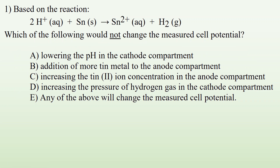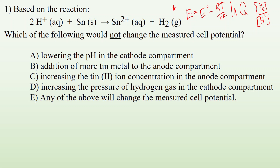Number one: based on the reaction shown, which of the following would not change the measured cell potential? We know that our equation is E equals E-naught minus RT over NF times the natural log of Q. So Q for this one is going to be products — the H2 gas over the H+ ion concentration. Anything in this equation will affect the cell potential. If we lower the pH, we're changing the H+ concentration, so that will affect it. Addition of more tin metal to the anode compartment — well, tin metal is not part of this equation, so this one should not change the potential.